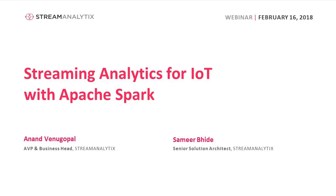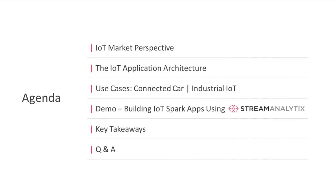Today's topic is streaming analytics for IoT with Apache Spark — three big topics: streaming analytics, IoT, and Spark. We'll get into the IoT domain first and look at the market perspective, then get into the application architecture and what it takes to build IoT applications. We'll look at a couple of real use cases solved for major customers in North America, followed by a demo and Q&A.